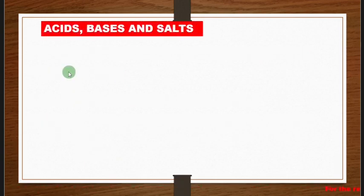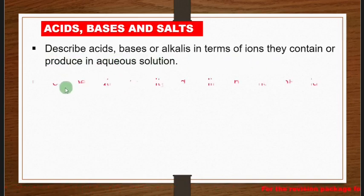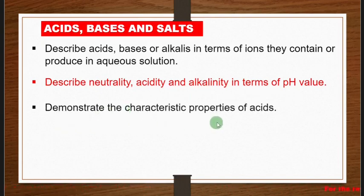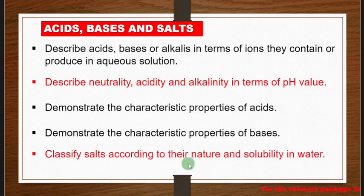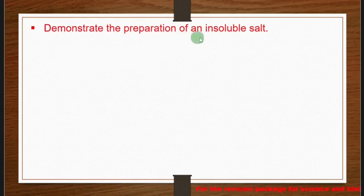From here, we need to look at acids, bases, and salts. Under acids, bases, and salts, you need to describe acids and bases or alkalis in terms of the ions they contain or produce in aqueous solution. Also describe neutrality, acidity, and alkalinity in terms of pH values, demonstrate the characteristic properties of acids and bases, and classify salts according to their nature and solubility in water. You also need to demonstrate the preparation of an insoluble salt.